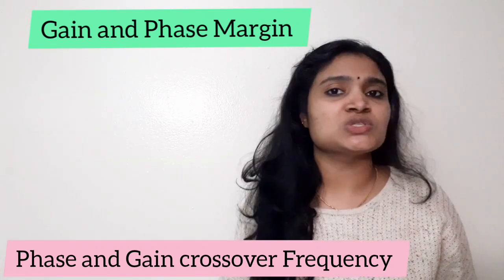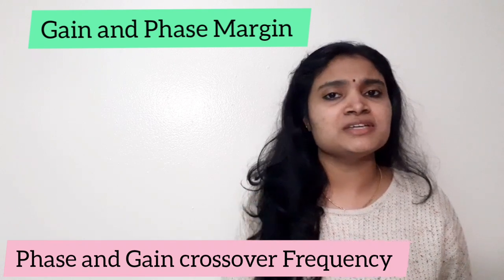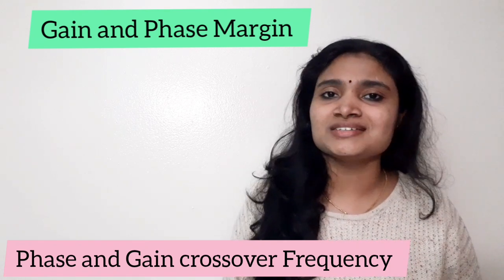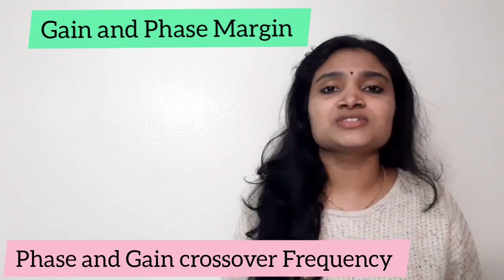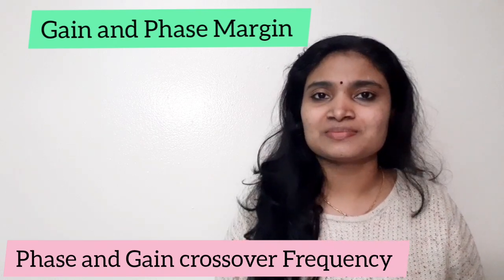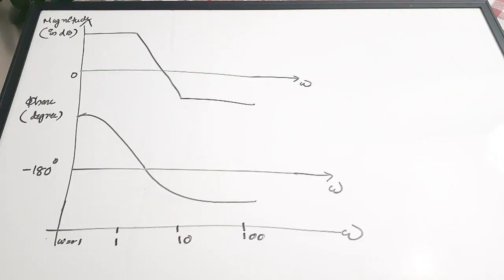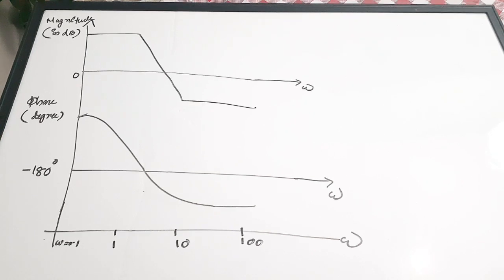This is part 3 of Bode plots. Let us discuss the gain crossover frequency, phase crossover frequency, gain margin, phase margin, and the stability conditions. Most students have a lot of difficulty understanding these concepts, so let us try to simplify them in this video.